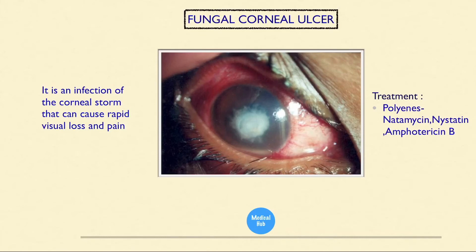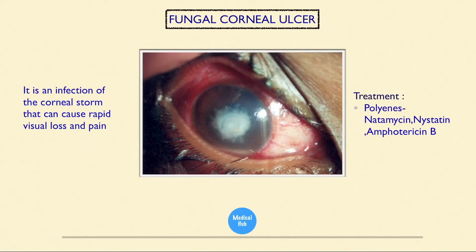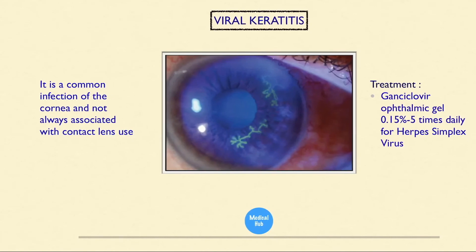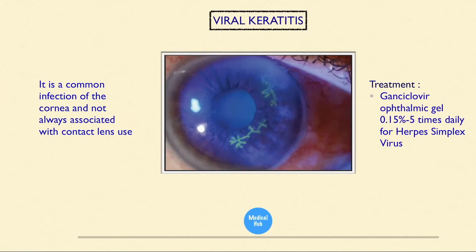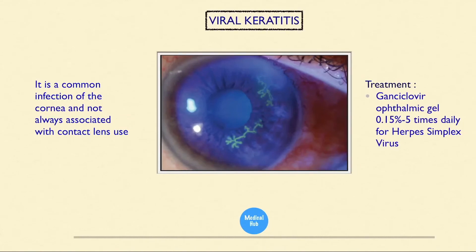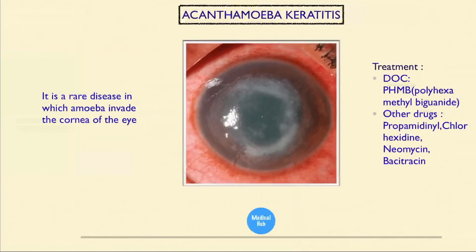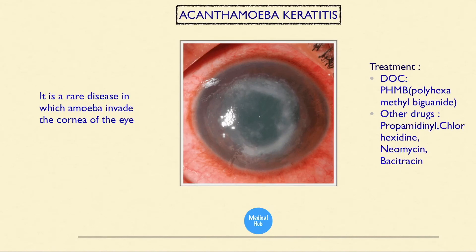This is viral keratitis — a common infection of the cornea not always associated with contact lens use. Treatment is ganciclovir ophthalmic gel 0.15%, five times daily, for herpes simplex virus. This is acanthamoeba keratitis — a rare disease in which amoeba invades the cornea. Drug of choice: PHMB (polyhexamethylene biguanide). Other drugs: propamidine, chlorhexidine, neomycin, and bacitracin.